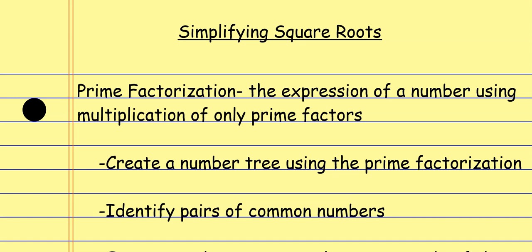The first way is utilizing the prime factorization. You've probably seen this before, but maybe you don't remember the term. It's basically when we take a number and break it down into as many numbers as possible using multiplication until we can't break any of the numbers down any further — the expression of a number using multiplication of only prime factors. We're going to create a factor tree using the prime factorization, done in a tree-type format.